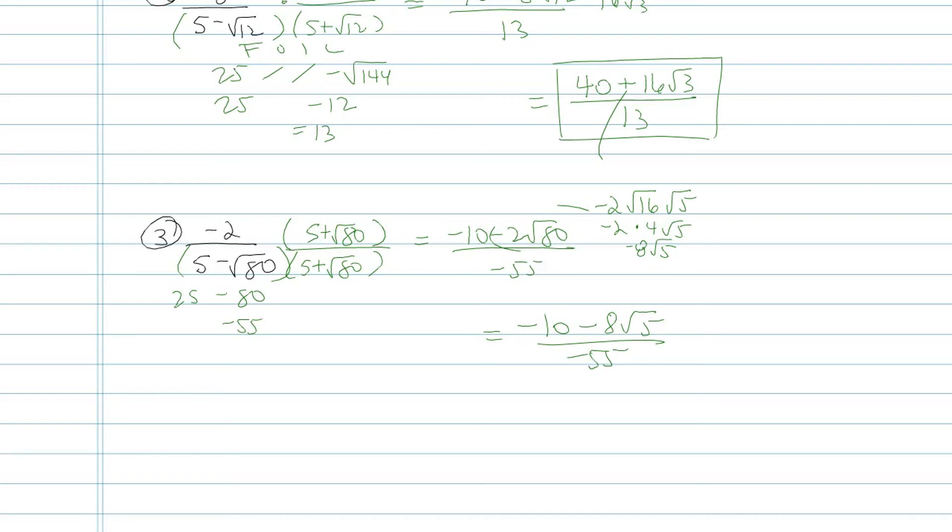So in the previous problem, in example two, I stopped there. Except for here, I can't stop there because some of this stuff is going to reduce. I'm going to rewrite it as two separate fractions. Minus eight root five over negative fifty-five. And the reason why is because that's easier for me to see what reduces. Ten over fifty-five is going to become two over eleven. And then the second part doesn't reduce. There's my final answer there.